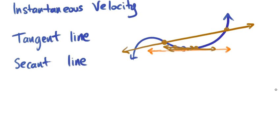So a secant line goes through two points of your graph. A tangent line touches the graph at only one point.